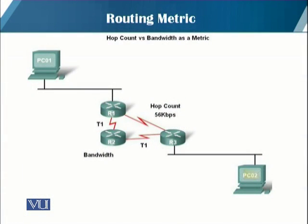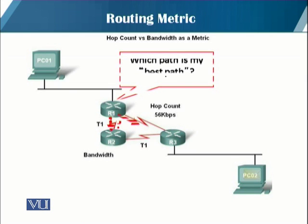Let's compare two metrics: hop count versus bandwidth. In a typical network, if the metric is hop count, then the best path will be from R1 to R3 and then to PC02. But if the metric is bandwidth, then the path will be PC01 to R1, then R2, then R3, and then PC02.